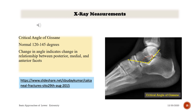The critical angle of Gissane is normally 120 to 145 degrees. A change in this angle indicates a change in the relationship between the posterior, medial, and anterior facets.